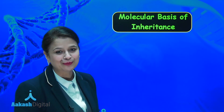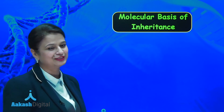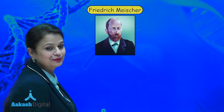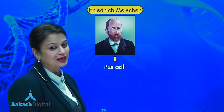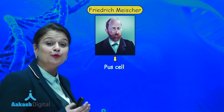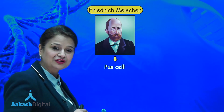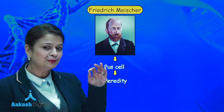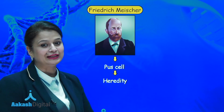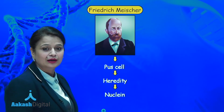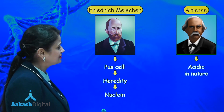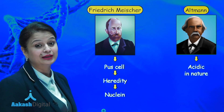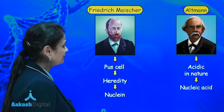First of all, I will be talking about some scientists associated with the discovery of DNA. Coming to the first one, Frederick Miescher — from the first cell he extracted a substance responsible for the transfer of characters from one generation to another. He extracted this substance from the nucleus, so he named it 'nuclein'. Later, Altman found that this substance is acidic in nature, and renamed it 'nucleic acid'.